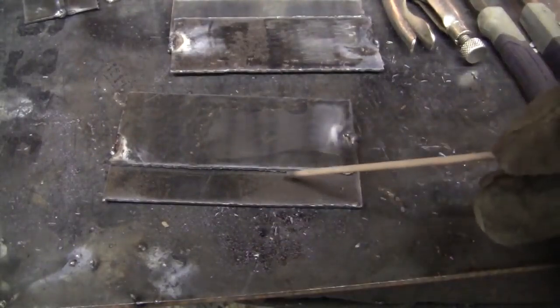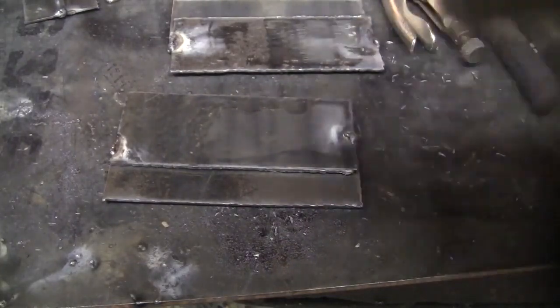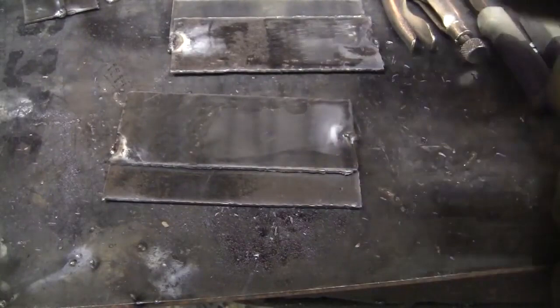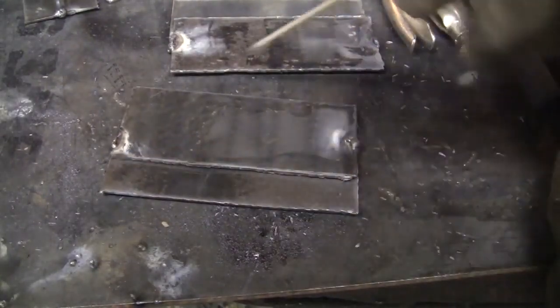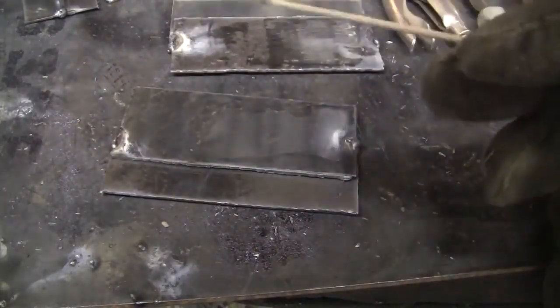Only weld about an inch at a time. So what I'd do is I'd start here, weld to here. Stop, give it a few minutes to cool. Start here, weld to the beginning of the first weld. Stop, give it a few minutes to cool. Or you could just weld here, weld here, weld a little bit on the backside. You know weld in all sorts of random places all over the joint. And what that will do is greatly help to spread out the heat input and reduce warpage.